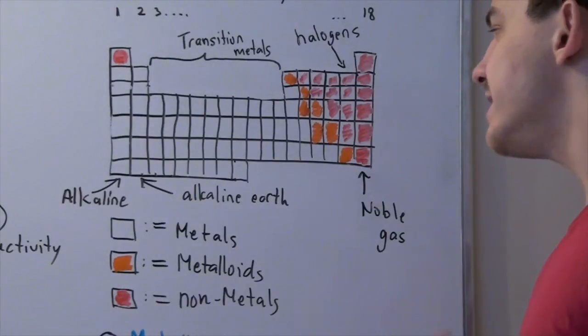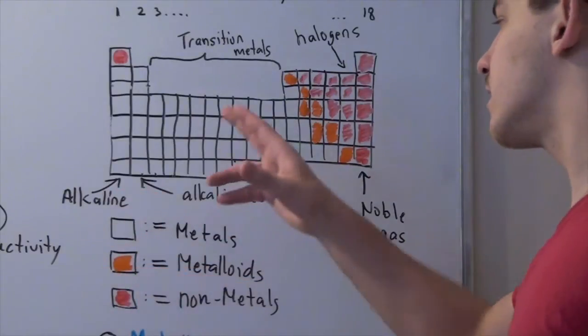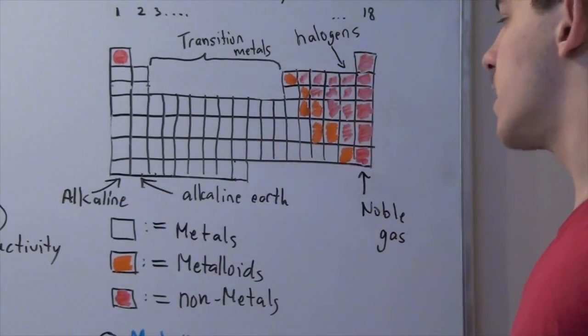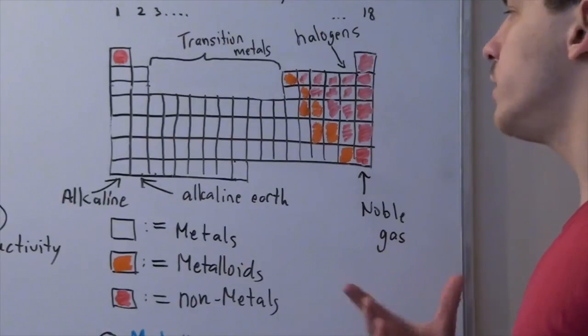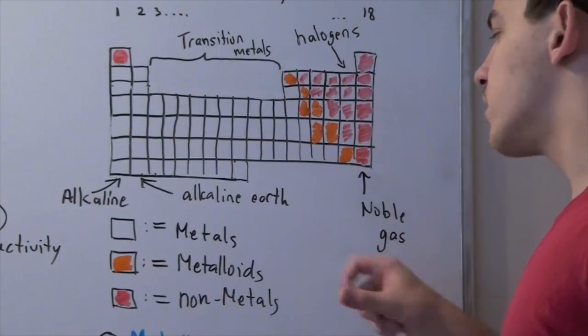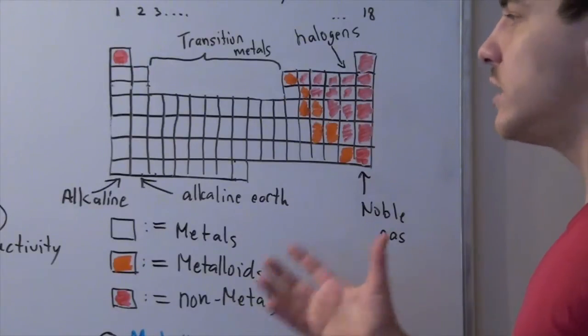Now, we're going to go into more detail in our next lecture about what the alkaline, alkaline earth, noble, halogens, and transition metals are. In this lecture, we're only going to look at the three divisions that exist, namely metals, metalloids, and non-metals. So let's zoom out.